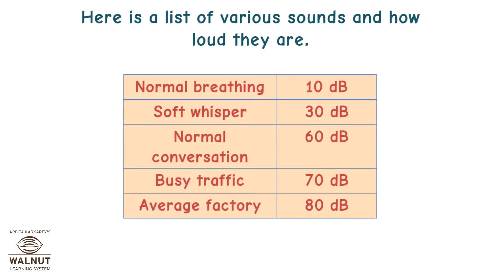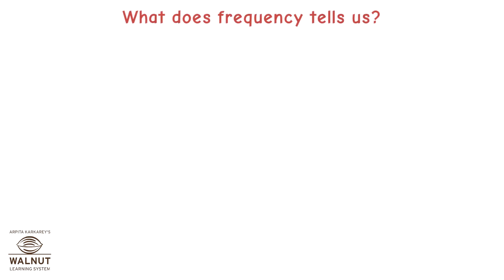Sounds above 80 dB are not good for our ears. Here is a list of various sounds and how loud they are: Normal breathing — 10 dB; soft whisper — 30 dB; normal conversation — 60 dB; busy traffic — 70 dB; average factory — 80 dB.